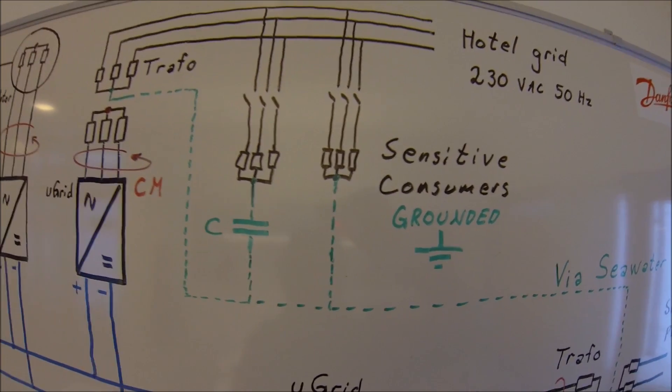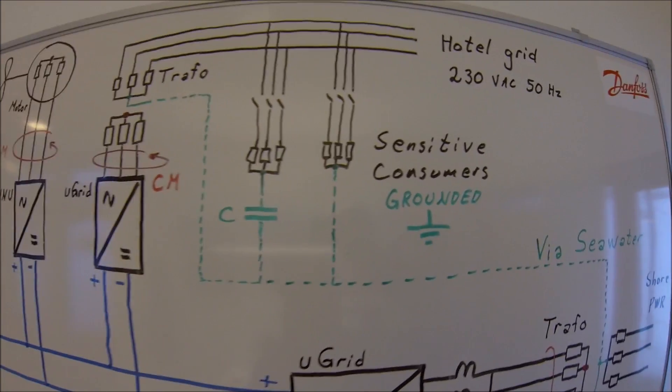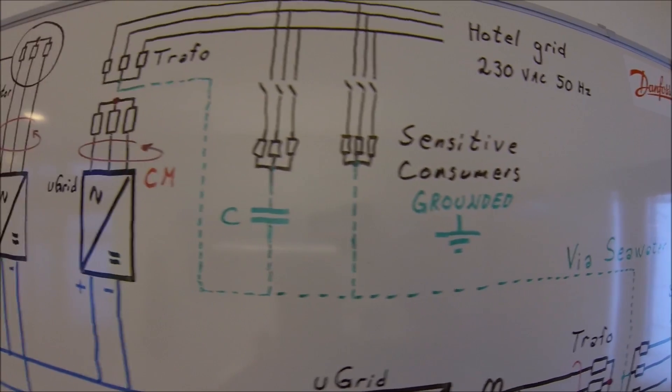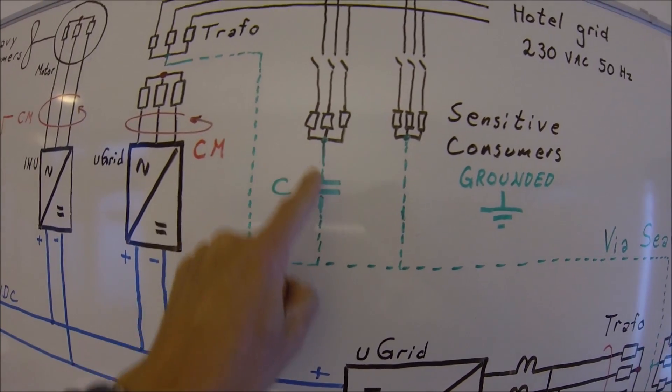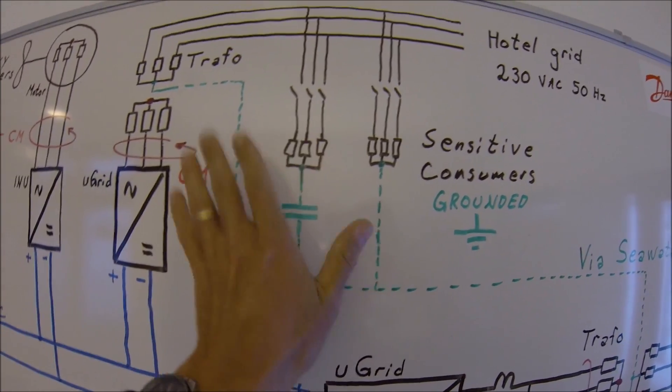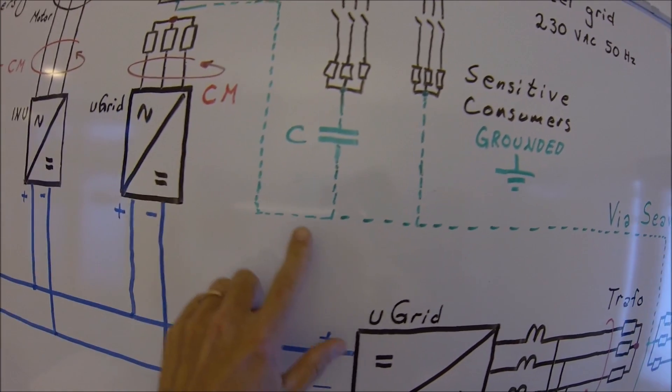If you look at the sensitive consumers like on the bridge, on the galley, your microwave ovens and all the dimmers and stuff, there are capacitive connections between these consumers and protective earth.